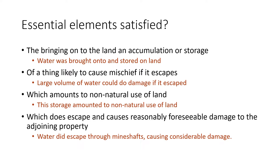There are four elements as identified in that case. First, the bringing onto the land and accumulation or storage of an item — here, water was brought onto and stored on the land. Second, the thing must be likely to cause mischief if it escapes — a large volume of water can of course do damage. Third, it must amount to a non-natural use of the land — creating a reservoir was non-natural because there was no reservoir there before. Fourth, the thing must escape and cause reasonably foreseeable damage to the adjoining property — water escaped through the mine shafts and caused considerable damage.